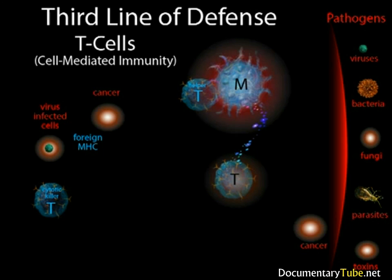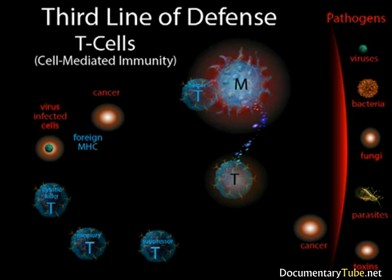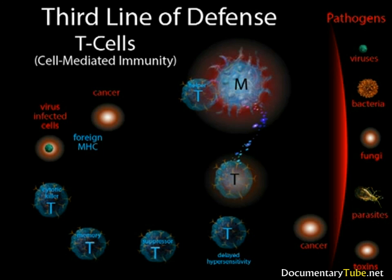Cytotoxic, or killer T cells, and helper T cells are classified as effector T cells. Memory T cells store the chemical compositions of pathogens and the attacks against them. Suppressor T cells shut down the immune system in case the attack is against the body itself — an autoimmune response — or when the immune response is over. Another type of effector T cell is the delayed hypersensitivity T cell. This kind of T cell responds to antigens by releasing chemicals which promote inflammation, and it promotes phagocytosis by attracting macrophages through chemotaxis. These cells are particularly active in allergic reactions — for example, the itching and burning sensation caused by poison ivy is a delayed hypersensitive T cell response.